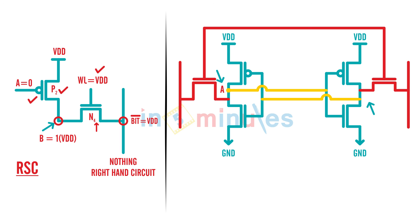This was node A and this was node B. This was the bit line and this was the bit bar line. Both the NMOS pass transistors have their gates shorted together, and we call that the word line. Let's label all our transistors: P1, P2, N1, N2, N3, and N4.